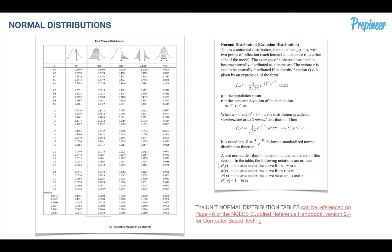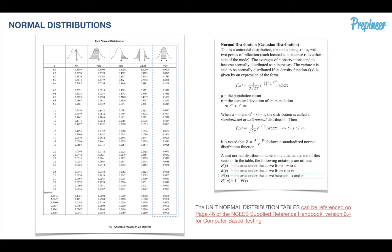The table explains what each column means. Fx is the area under the curve from negative infinity up to x. Rx is from x to infinity, where x is a random discrete variable. Wx is the area under the curve between negative x and x — that's a uniform banded region, which we have to pick and choose and tweak to get our final result.